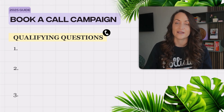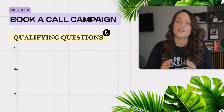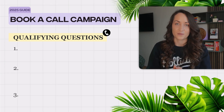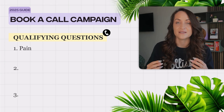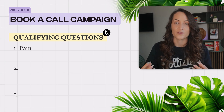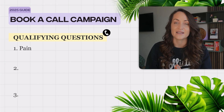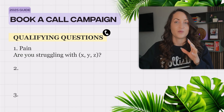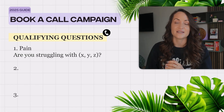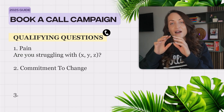If you're driving traffic directly to Calendly, I recommend including a few qualifying questions. Here are three that I like to include. The first one is about pain — you make sure the person booking the call is actually experiencing the struggles you are able to help with. You would typically ask something like: are you struggling with X, Y, or Z pain points?